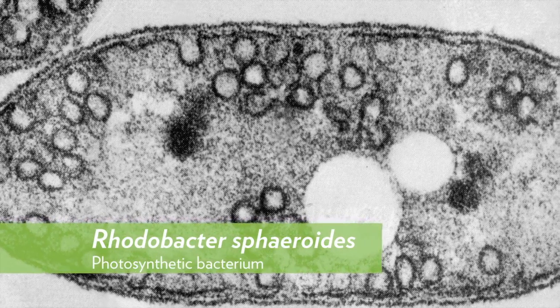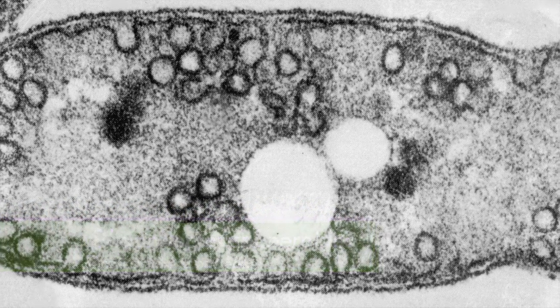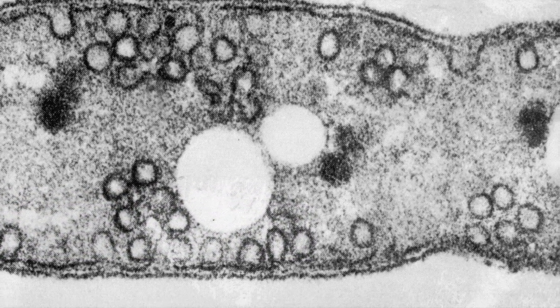In general we're interested in using Rotobacter spheroides for biofuel production. Rotobacter when it grows photosynthetically naturally produces a large amount of lipids, and lipids are one of the compounds being considered for use as the next generation biofuel.